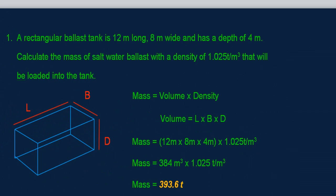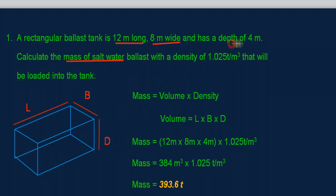Problem number one: a rectangular ballast tank is 12 meters long, 8 meters wide and has a depth of 4 meters. Calculate the mass of salt water ballast with a density of 1.025 tons per cubic meter that will be loaded into the tank. The length is 12 meters, the breadth is 8 meters and the depth of the tank is 4 meters.